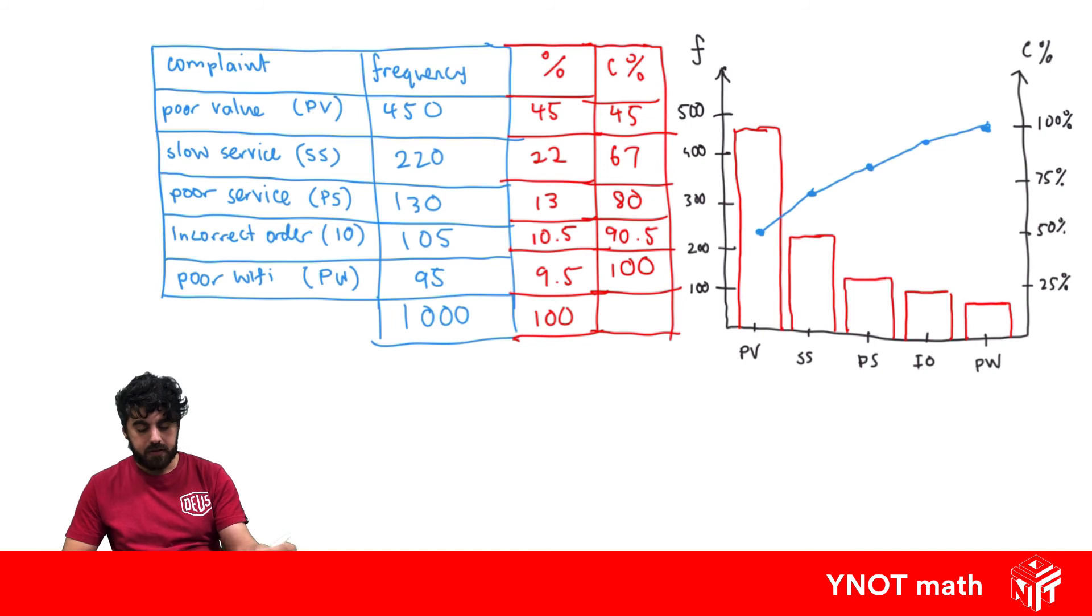Now we can analyze what the fast food company can do to increase their performance. We can see that poor value and slow service, these first two, are actually taking up 67% of all their complaints.